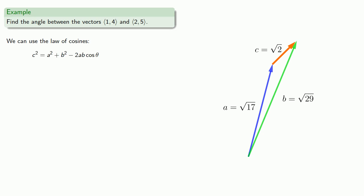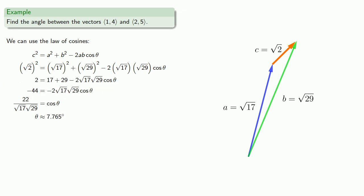Using the law of cosines, filling in our values, and solving for the angle, we find the angle between the vectors is about 8 degrees.